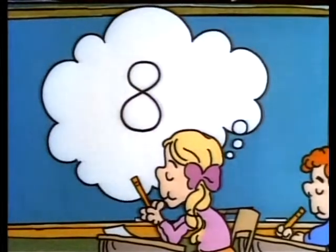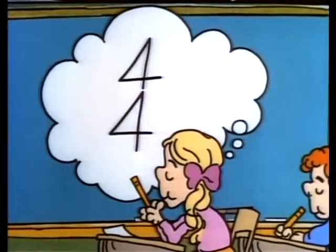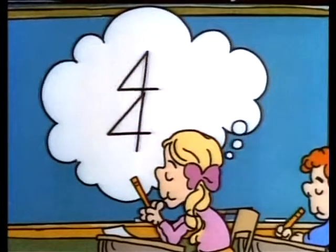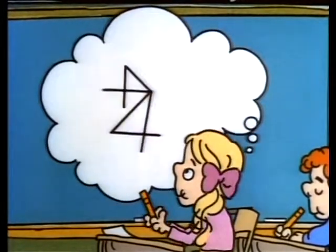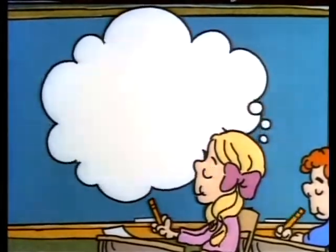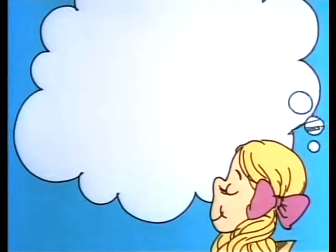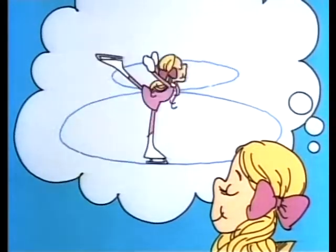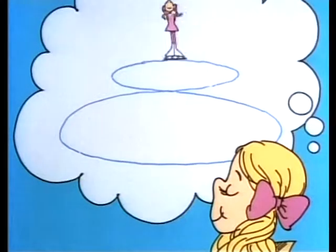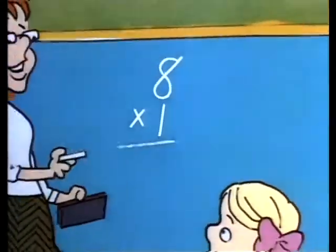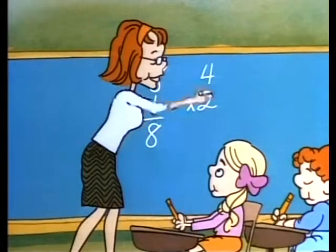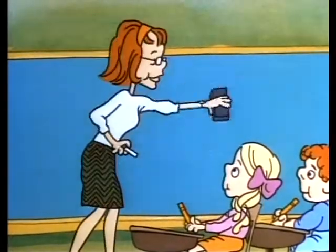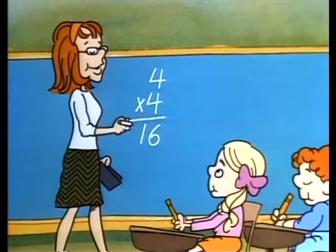Figure eight is double four. Figure four is half of eight. If you skate you would be great if you could make a figure eight. That's a circle that turns round upon itself.